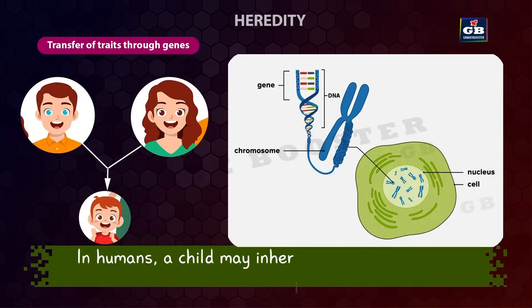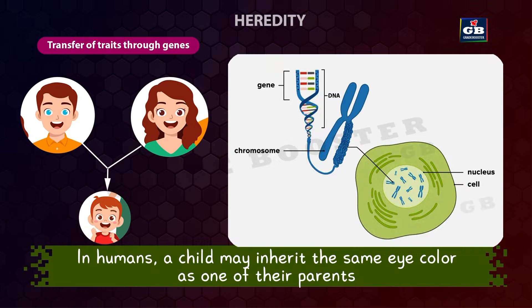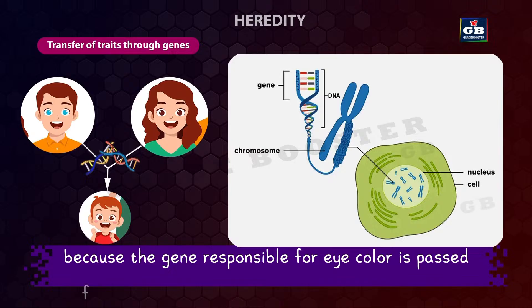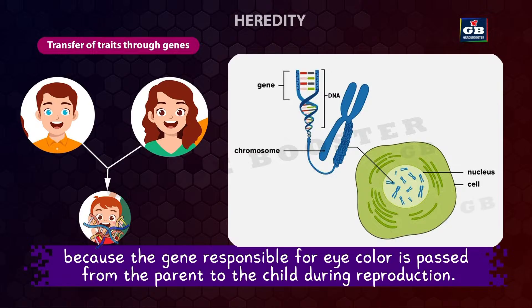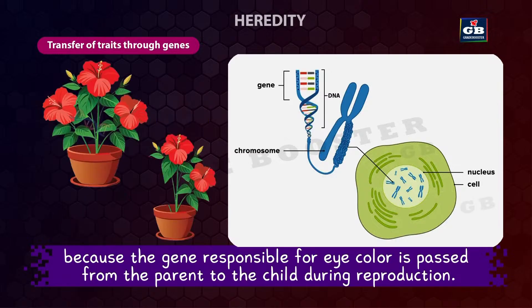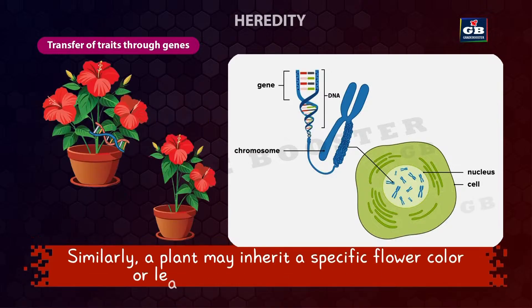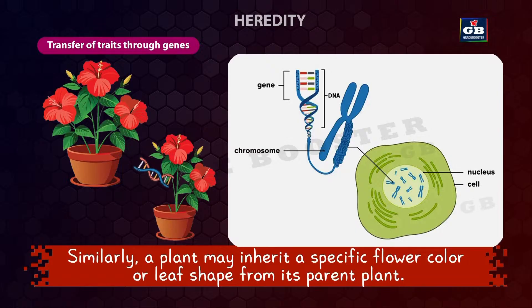For example, for humans, a child may inherit the same eye color as one of their parents because the gene responsible for eye color is passed from the parent to the child, along with many other physical traits. Similarly, a plant may inherit the specific flower color or leaf shape of its parents.